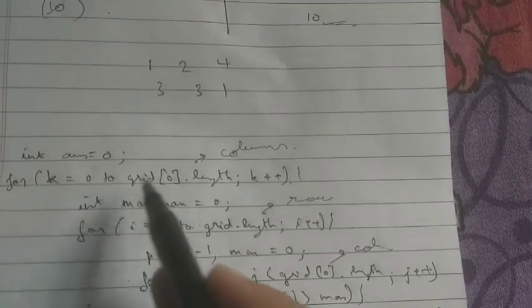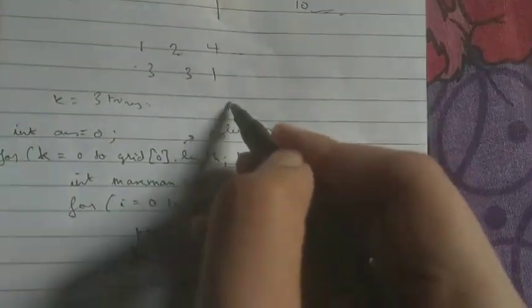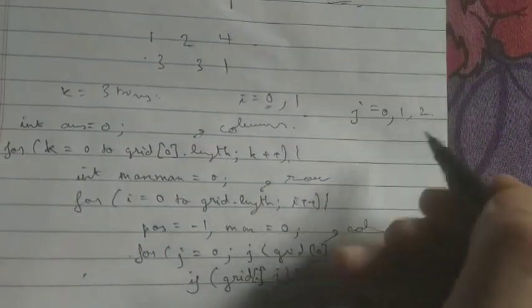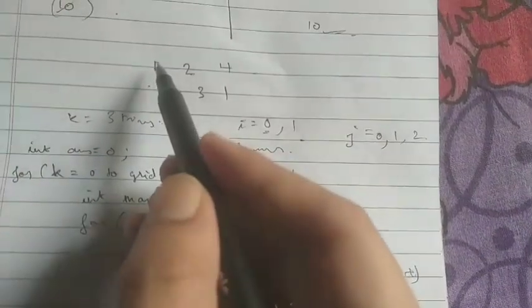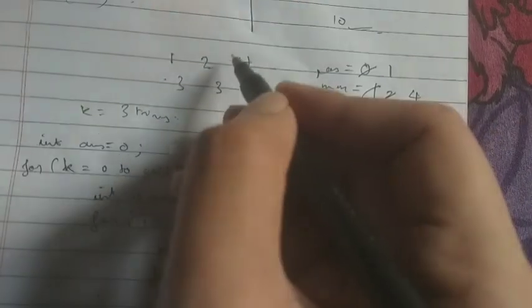Let's do the dry run for the grid: [1, 2, 4], [3, 3, 1]. k goes from 0 to grid[0].length, so k will run 3 times. i goes from 0 to grid.length, so i is 0 and 1. j goes 0, 1, 2. For i=0, position is -1 and max is 0: 1 > 0 so position becomes 0 and max becomes 1; 2 > 1 so max becomes 2 and position becomes 1; 4 > 2 so max becomes 4 and position becomes 2.